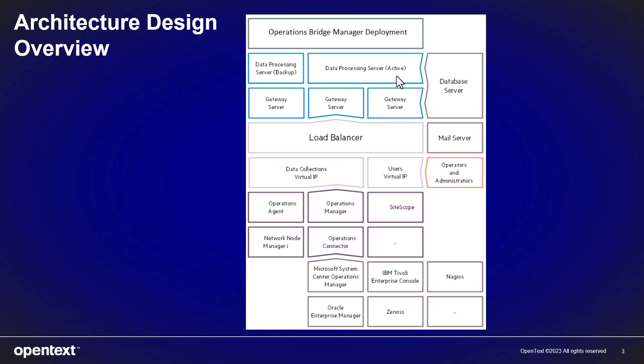The OBM data processing server is a server responsible for aggregating data, running the business logic engine, and controlling the runtime service model, RTSM service, within OBM. Only one data processing server can be active at a time.